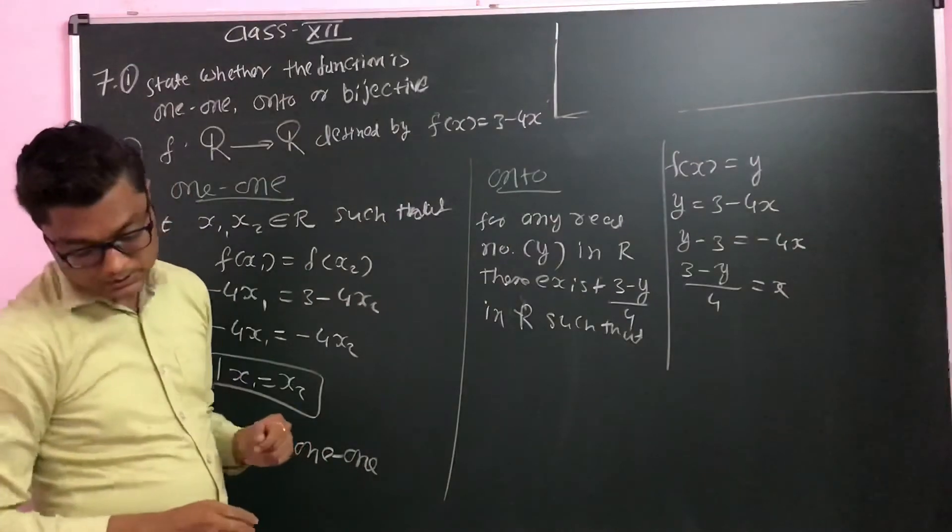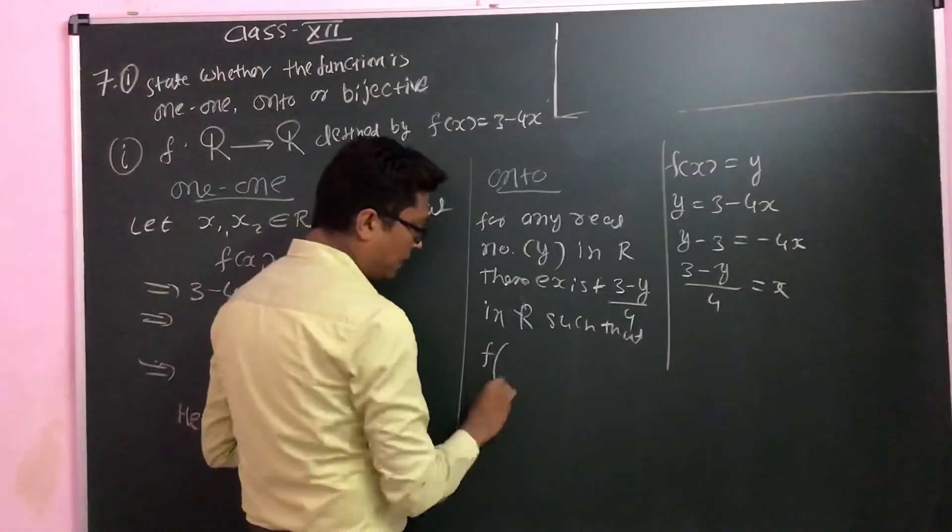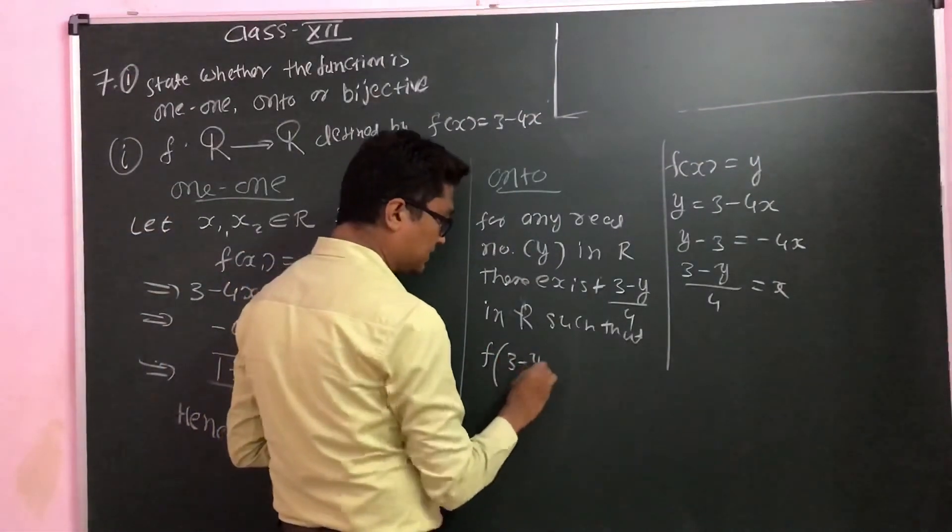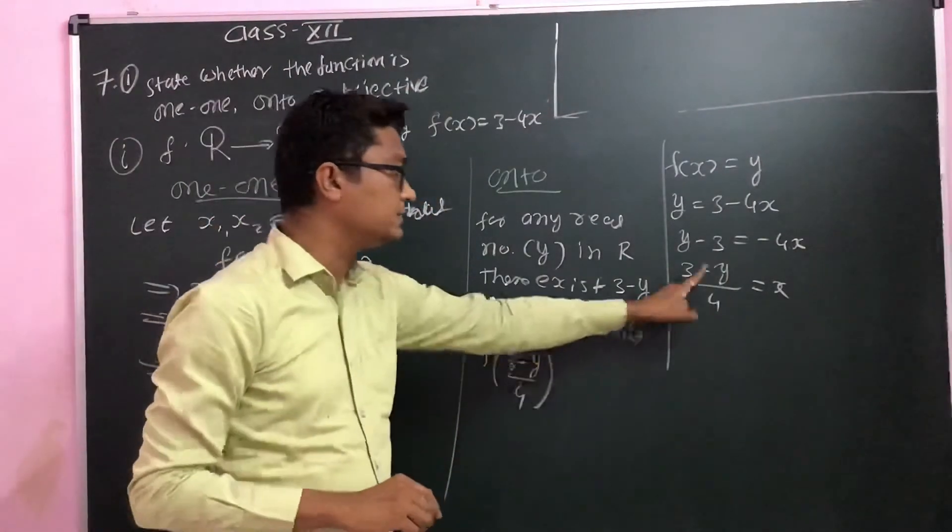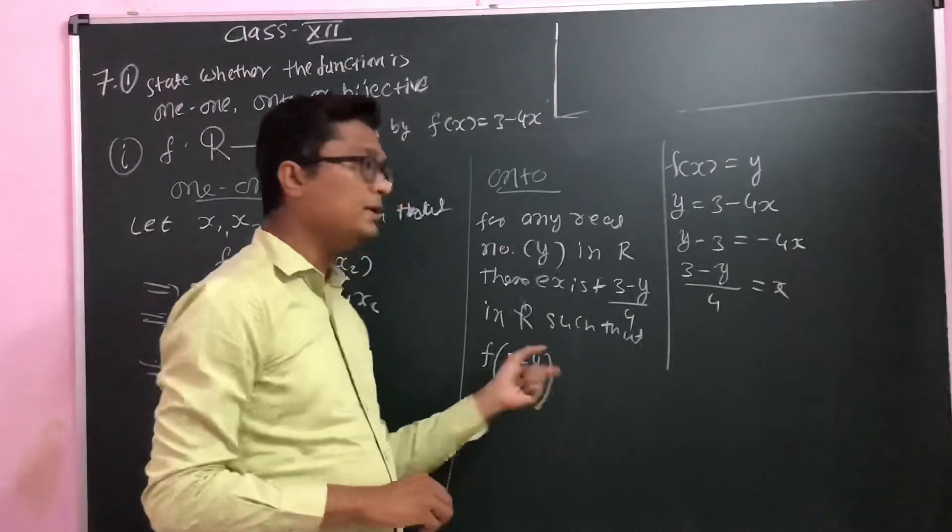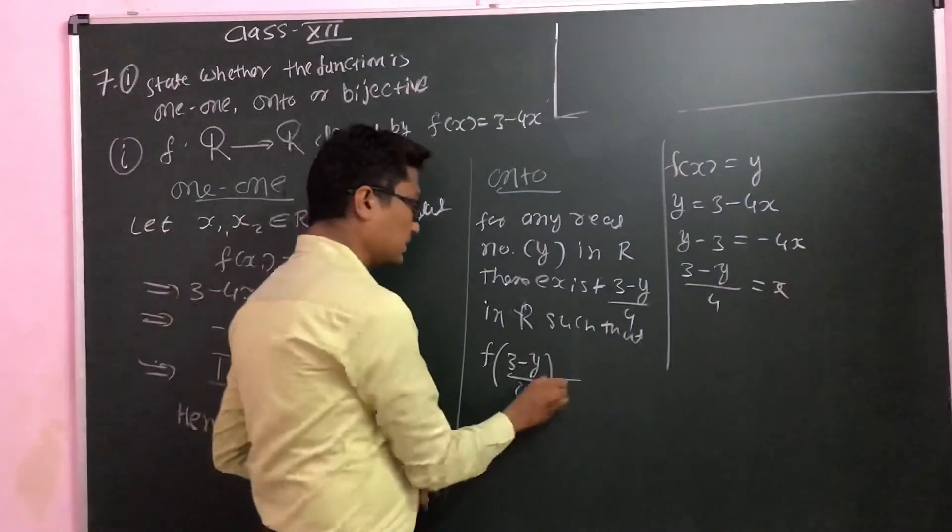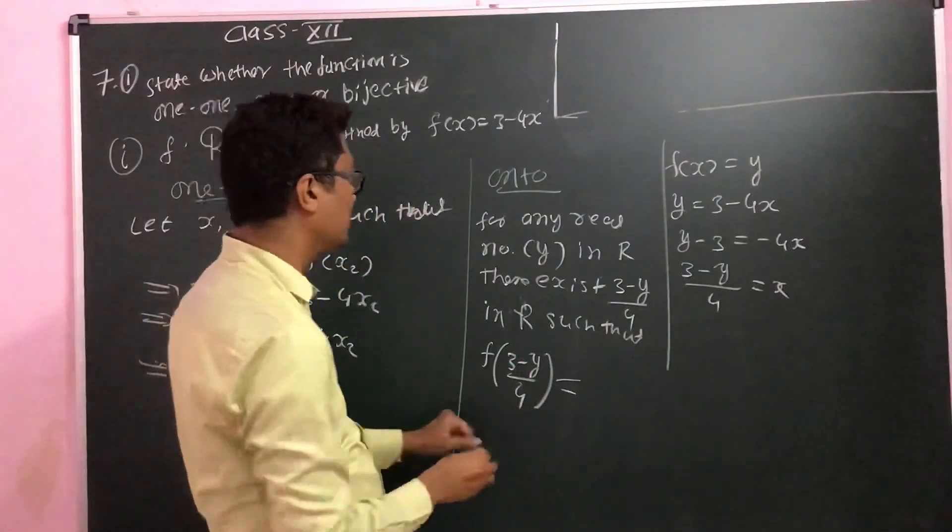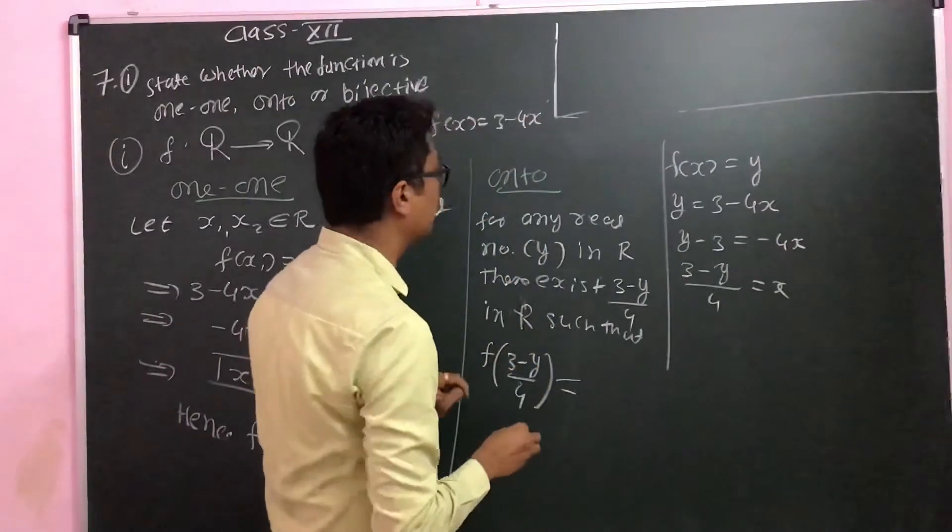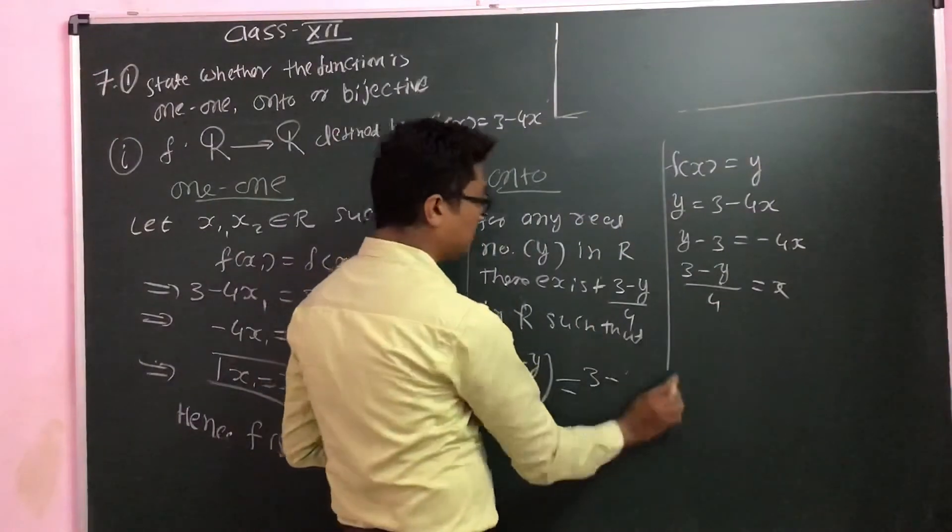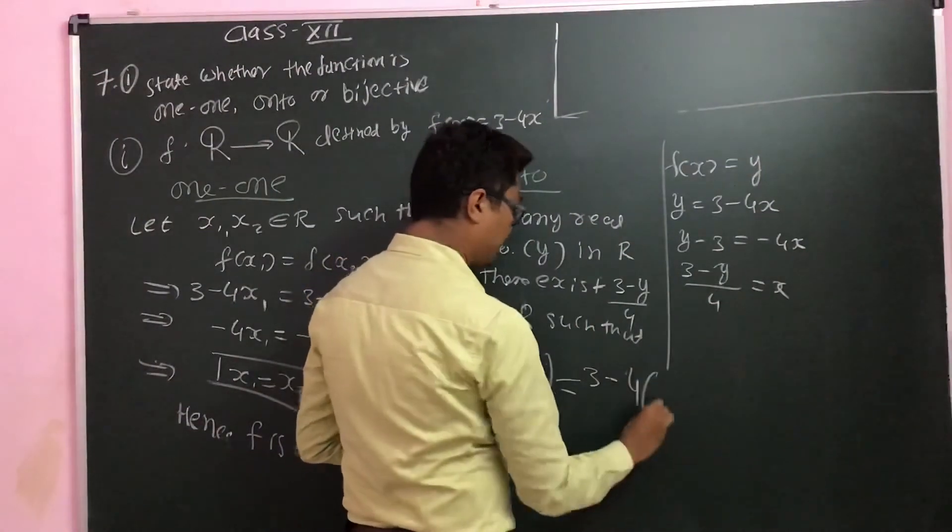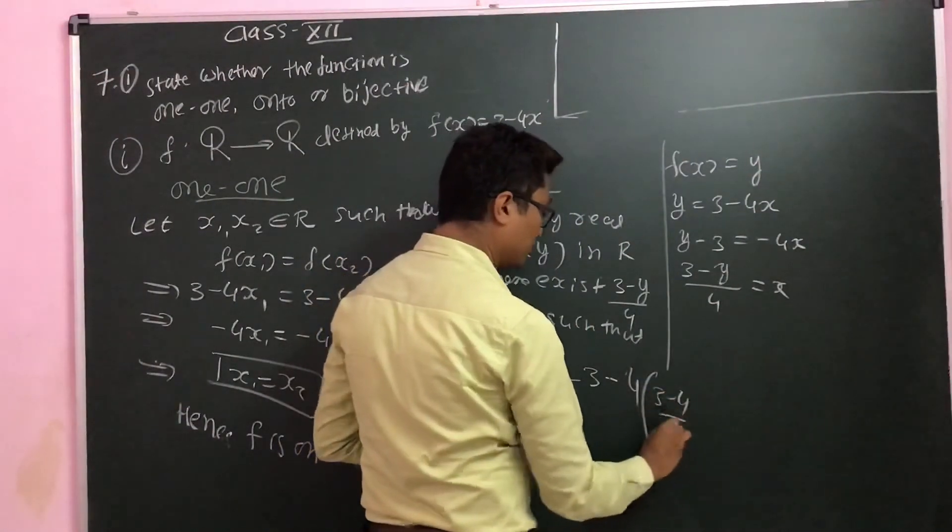Such that f of (3 minus y)/4, if x is this value, then what should I get as answer? y. So this value is x, so it is 3 minus 4 times (3 minus y)/4.